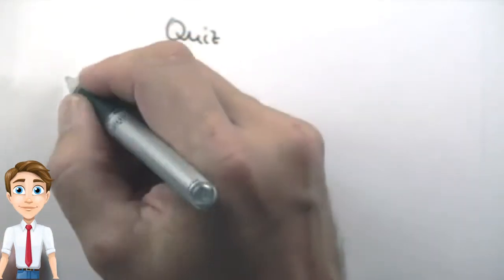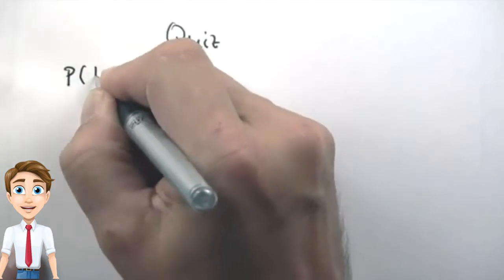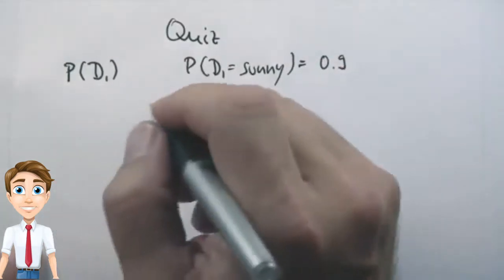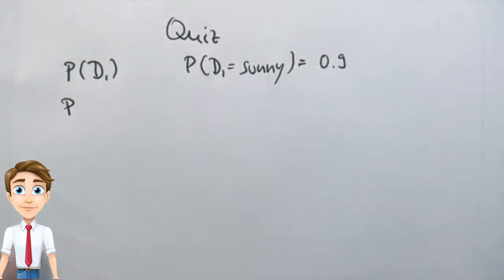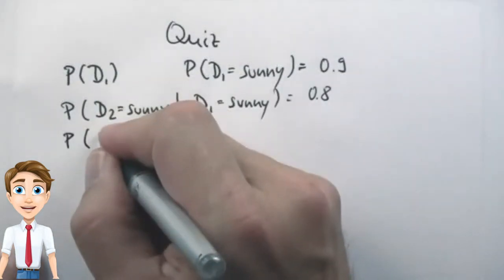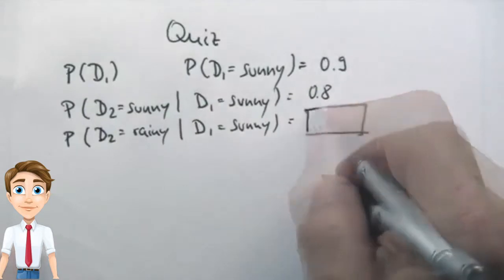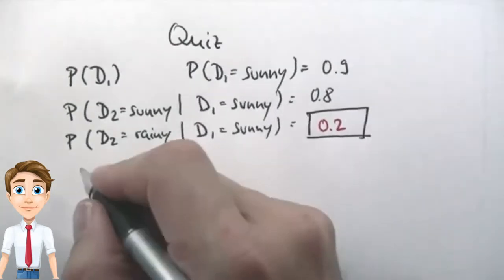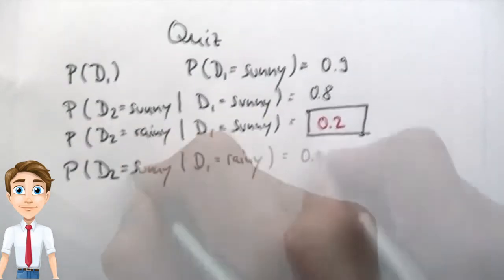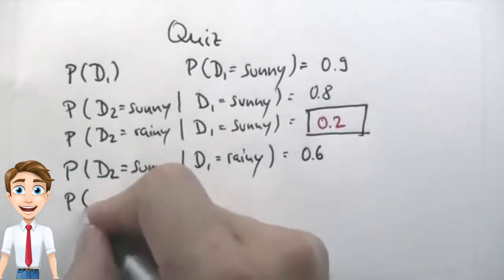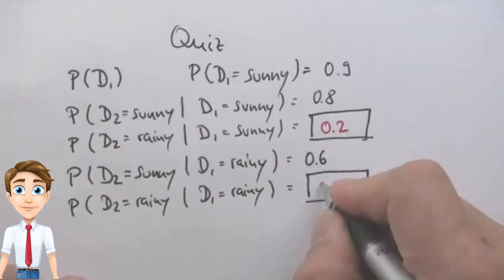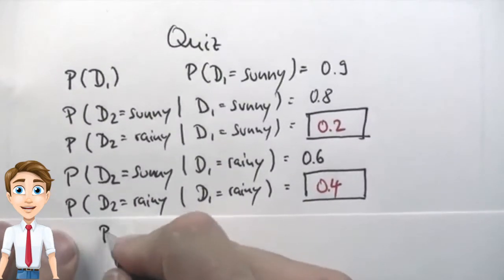Let's assume there are sometimes sunny days and sometimes rainy days. On day 1, which we're going to call D1, probability of sunny is 0.9. Let's assume that a sunny day follows a sunny day with 0.8 chance. And a rainy day follows a sunny day with, the correct answer is 0.2, which is the negation of this event over here.